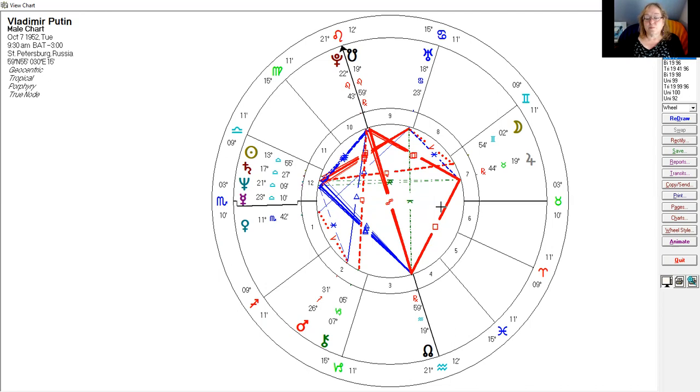As we sit here today, Saturn is approaching his North node. His progressed Mars has a Mars in Sagittarius. Sagittarius is acting in a big way, far-reaching, philosophical, can have a religious zealotry to it. That Mars is trine his Pluto in Leo, which brings up that narcissistic energy.